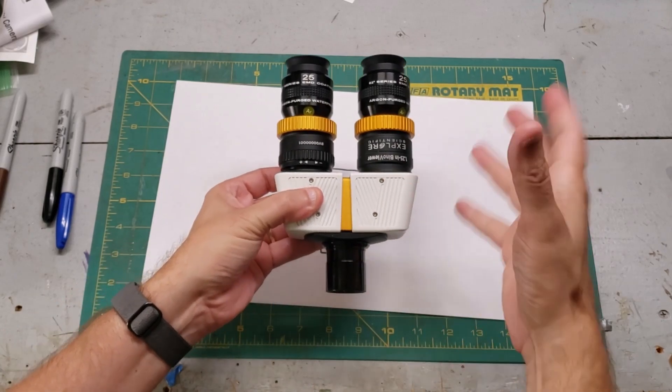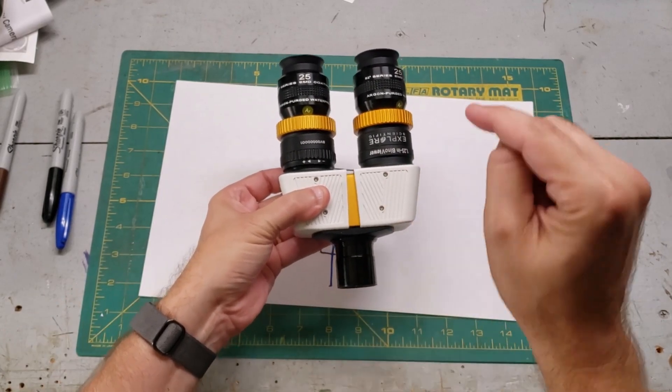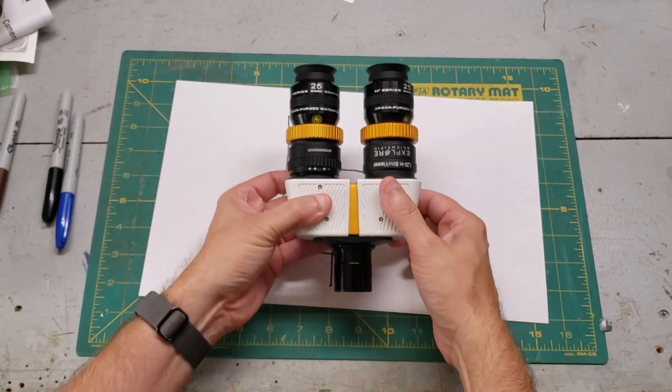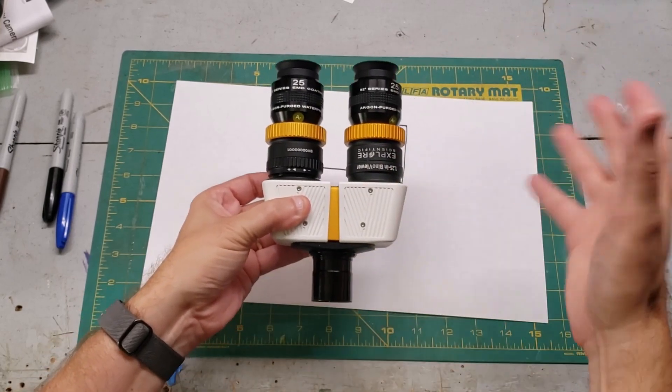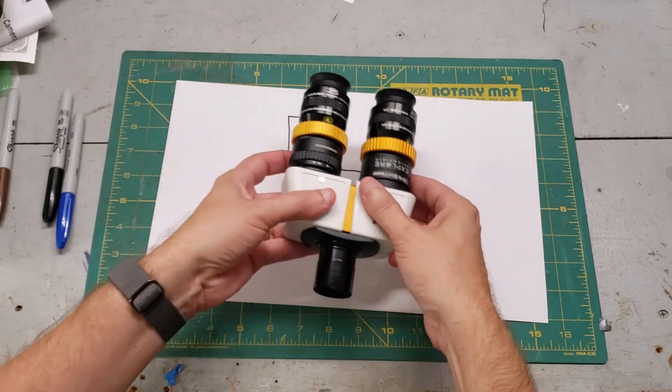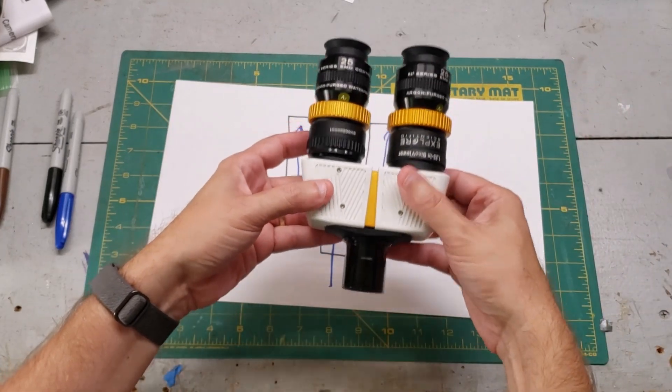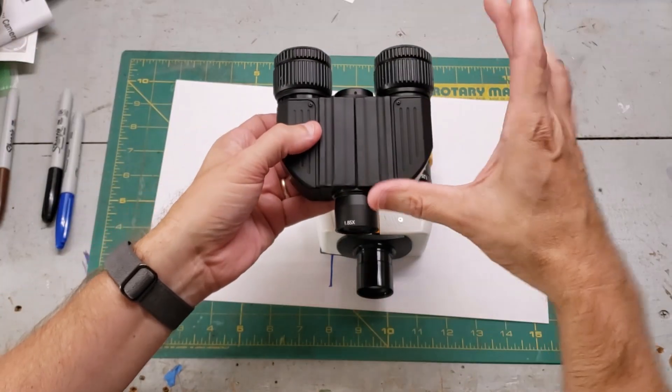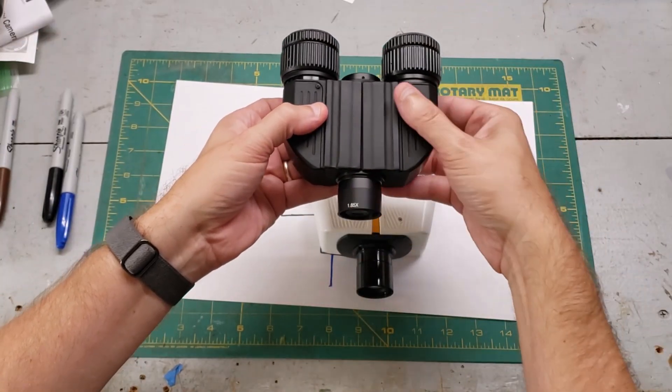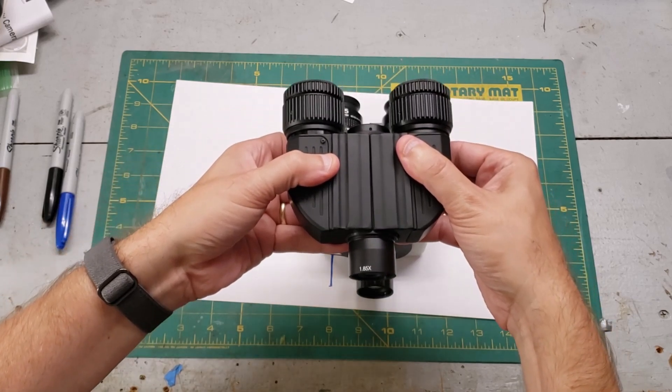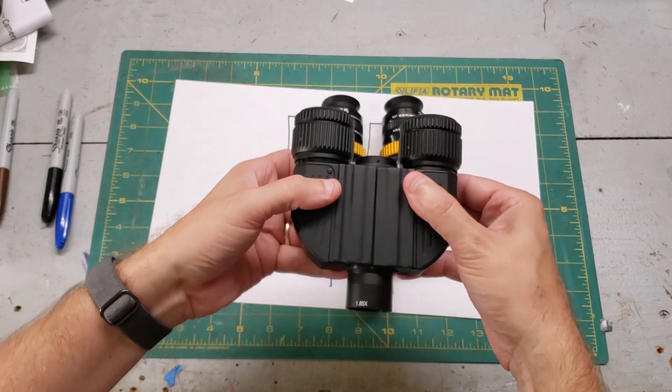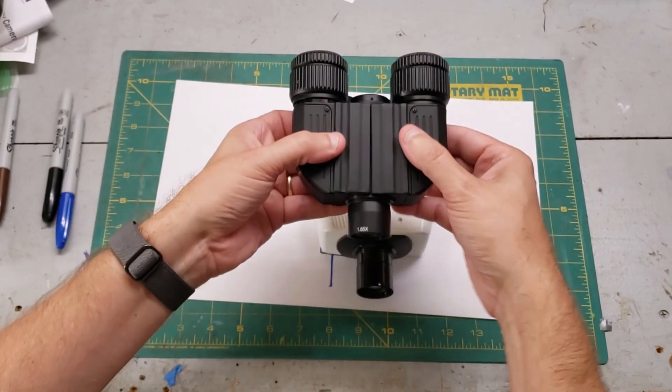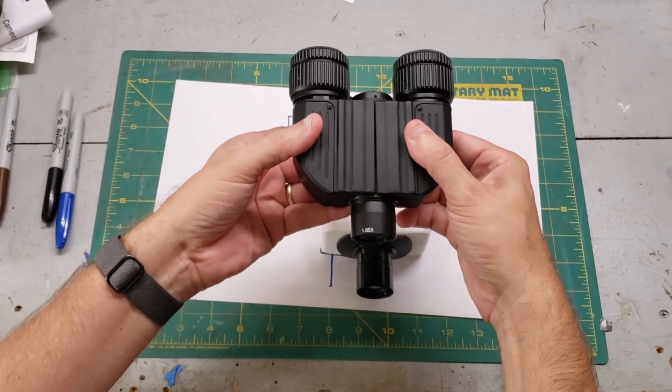Full disclosure, I borrowed these from Explore Scientific, and I have to return them immediately when I'm done recording this video. I was not paid or reimbursed. But what if you can't afford a nice parfocal bino viewer like this? And perhaps you bought a cheaper one that does not account for that extra focal distance. Somehow you're going to have to push this into the telescope by four to maybe six inches. How are you going to do that in reality? There are three main solutions.